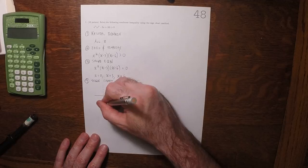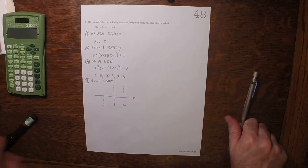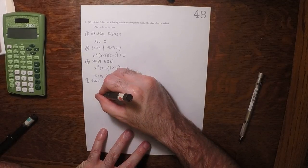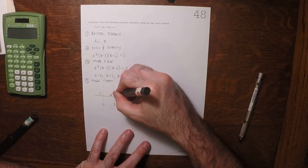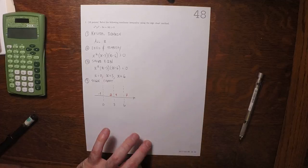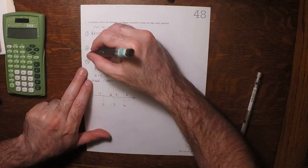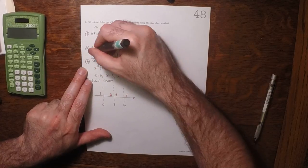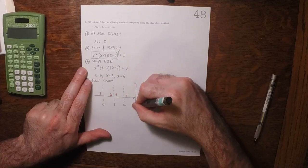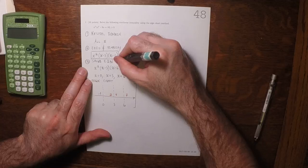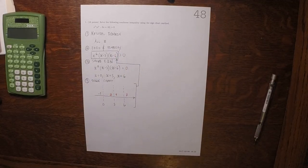They were 0, 3, and 6. So, some test points could be negative 1, 2, 4, and 7, and we're going to take those test points. We're going to plug them into that, and check for sign.